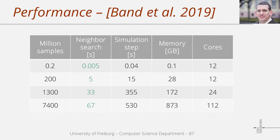The neighbor search in particle simulations is still an active research area. Here we see some performance measurements for a data structure presented in 2019, showing the number of particles, computation times for the neighbor search and for an entire simulation step, memory consumption, and the number of cores used. The neighbor search for 200K particles took 5 milliseconds on 12 cores. Further, 200 million and 1.3 billion particles could be processed in 5 and 30 seconds respectively. The scenario with 1.3 billion particles was processed on a single PC with 24 cores, and the scenario with 7.4 billion particles was computed on a small cluster with 112 cores, taking about one minute to estimate the particle neighbors.